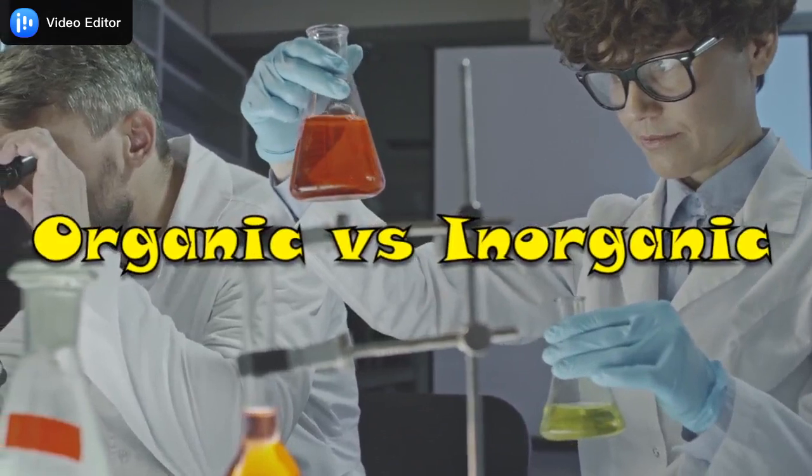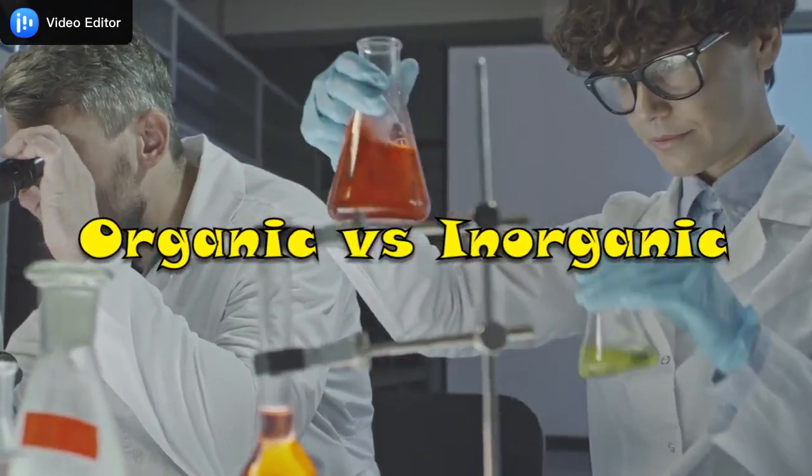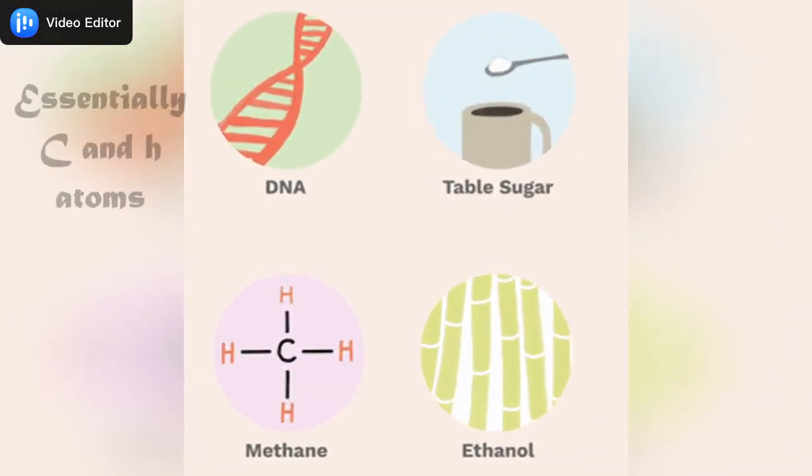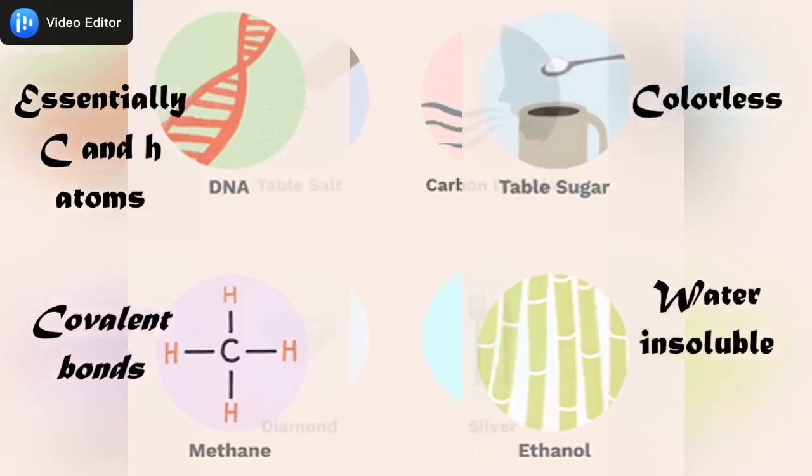But before we talk about carbon, we need to distinguish between organic and inorganic compounds. Organic compounds are those essentially having carbon and hydrogen atoms in the structure along with other atoms. The type of bond is mainly covalent, which we've already learned before. Most organic compounds are colorless and most do not dissolve in water.